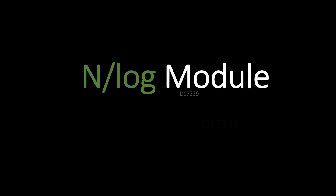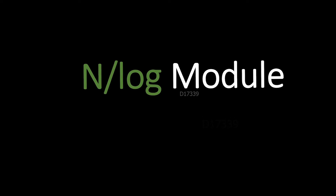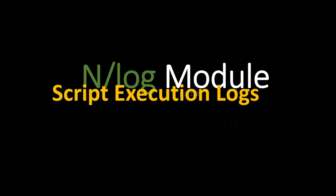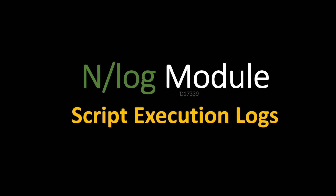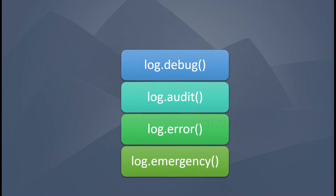Let's discuss the N/log module. We will see how to make use of this N/log module in our SuiteScript and also see how script execution logs made by this API are available in N/log. We have four different types of log APIs: log.debug, log.audit, log.error, and log.emergency. We will see how to make use of all these different log APIs in our script.